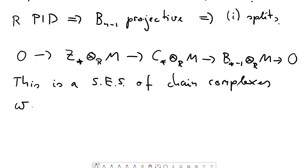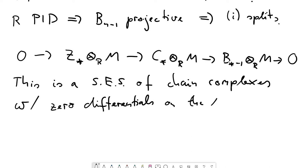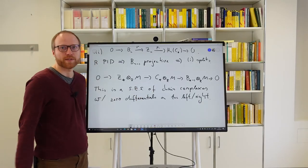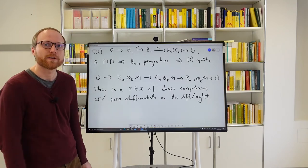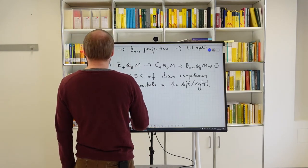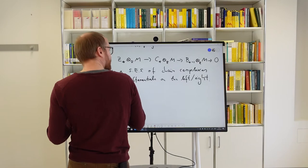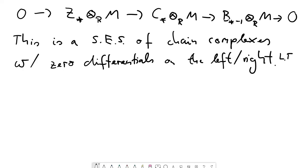This justifies that this is actually a short exact sequence of chain complexes — with zero differentials on the outer terms. Whenever we have a short exact sequence of chain complexes, we obtain a long exact sequence in homology. Let's consider the corresponding long exact sequence in homology.